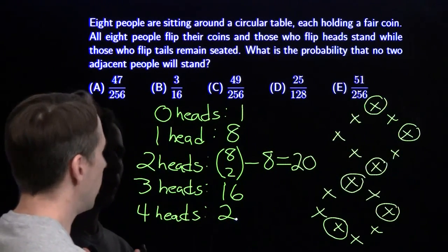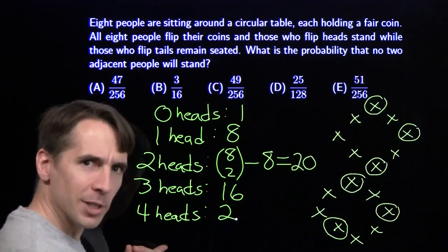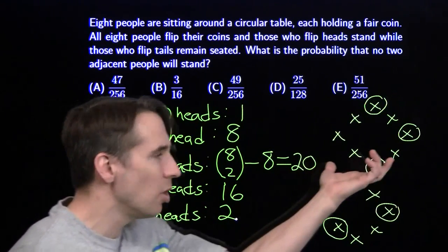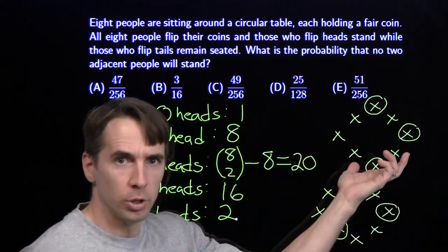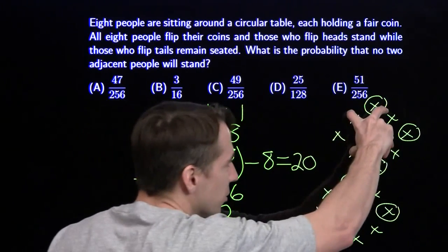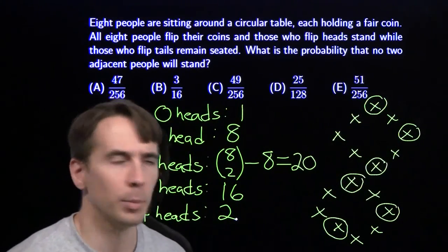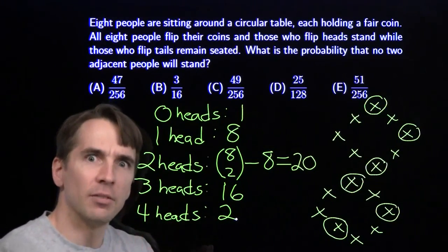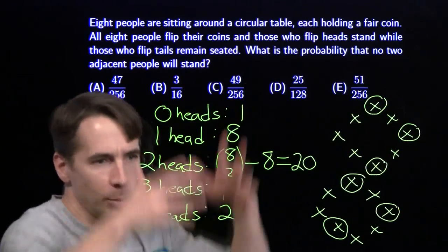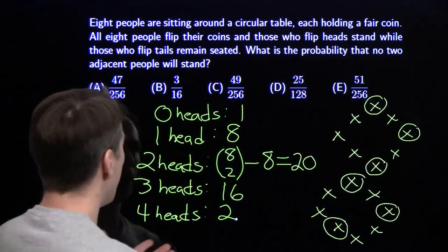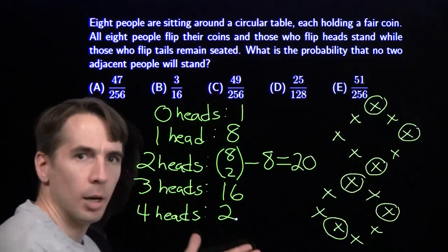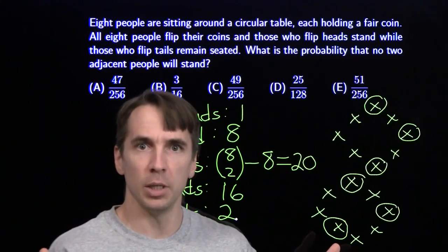Well, now I'm running out of room. Fortunately, we don't really have any more cases because five heads, well, there's no way to have five heads, no two adjacent. Now you start off with these four and throw in one more. It's going to be next to somebody. Same for six, same for seven, same for, certainly same for eight. Everybody's adjacent and standing up. So these are the only ways we can end up with no two adjacent people standing.